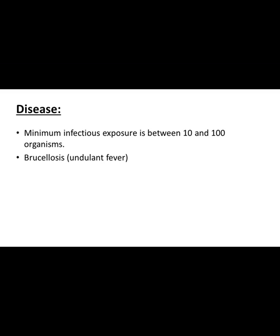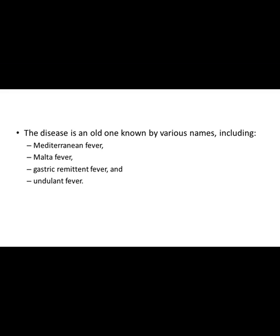Disease produced by them is brucellosis. Brucellosis is the disease produced by organism Brucella. Infective dose is very low — up to 10 to 100 organisms can infect. Brucellosis is also called undulant fever, and it is also called Mediterranean fever, Malta fever, gastric remittent fever, and undulant fever.